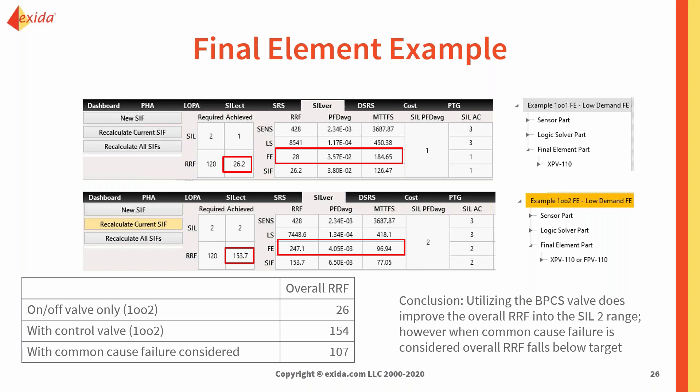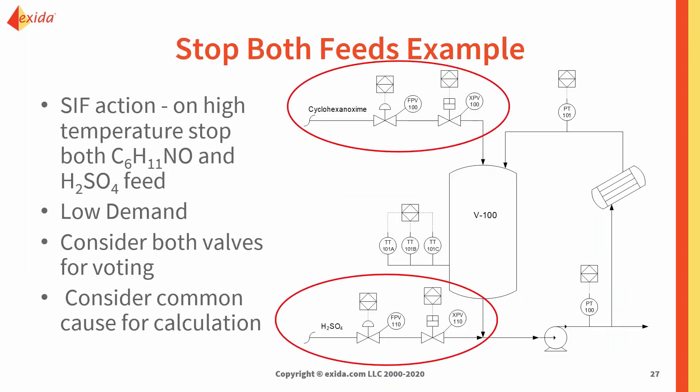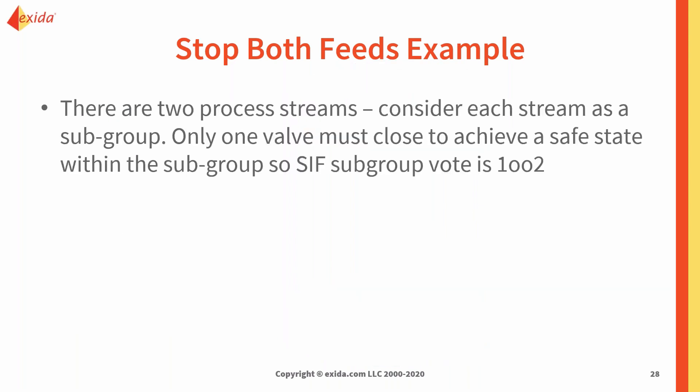Without common cause adjustment, utilizing the BPCS valve could theoretically take us into the SIL 2 range. But when we recognize the common cause failure, it falls below target. If we can't add full redundancy on our safety function, we may have to look at other provisions to get this compliant with that architecture. So we're stepping back, and the engineers have decided we need to stop both feed streams to achieve a safe state.